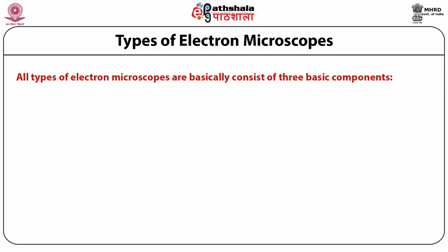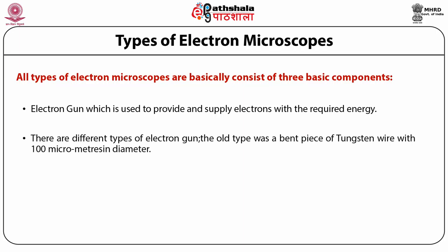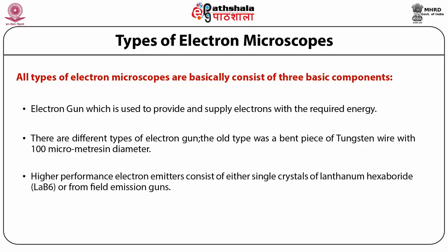Since electrons are easily scattered, all electron microscopes should operate under high vacuum. All types of electron microscopes basically consist of three basic components. The electron gun, which is used to provide and supply the electrons with the required energy. There are different types of electron gun. The old type was a bent piece of tungsten wire with 100 micrometers in diameter. Higher performance electron emitters consist of either single crystals of lanthanum hexaboride LAB6 or field emission guns.